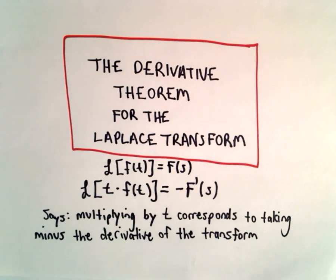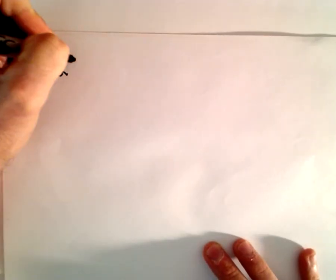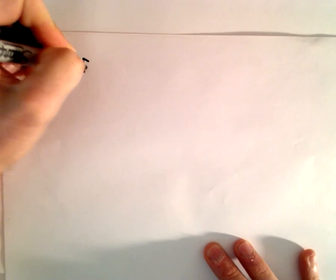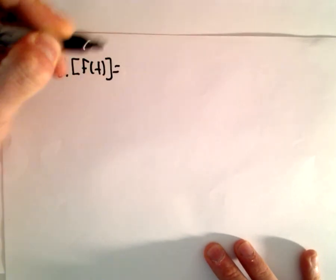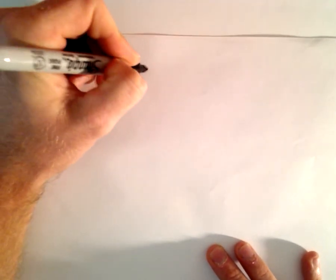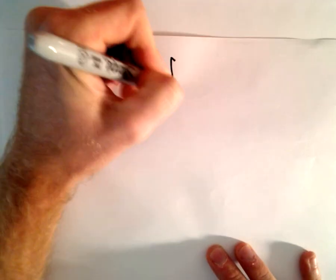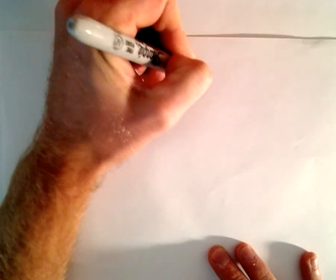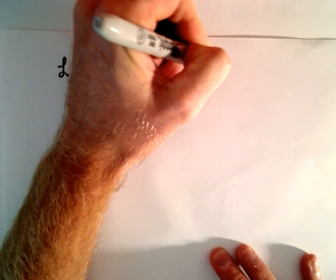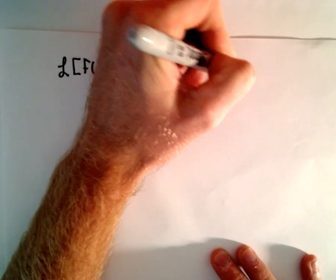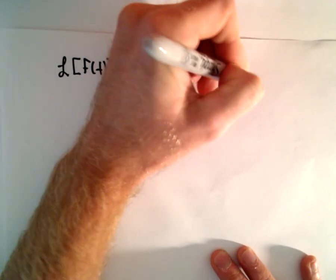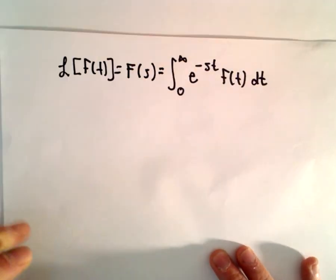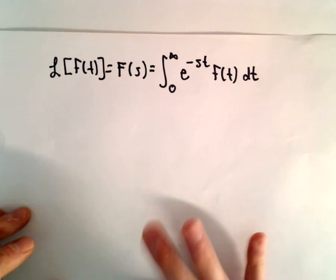So let's justify this real quick. It shouldn't be too terribly difficult — it should be pretty straightforward. The Laplace transform of f of t, which we denote as capital F of s, by definition is the integral from zero to infinity of e to the negative s times t, times f of t, dt. So that's our definition of the Laplace transform.